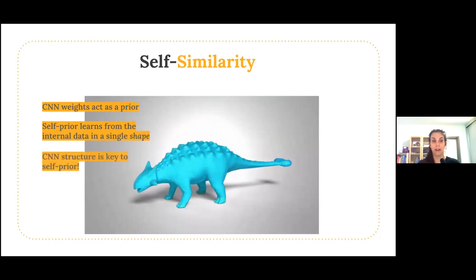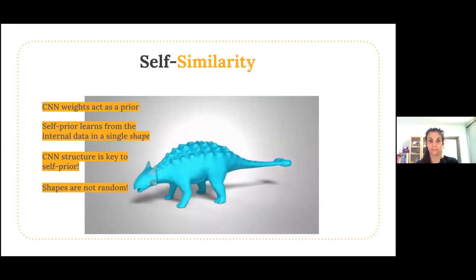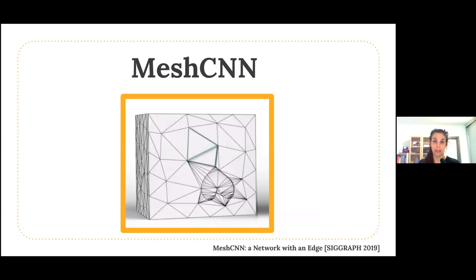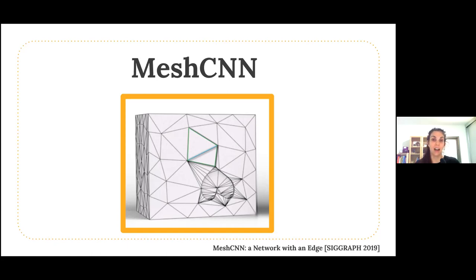The key to the self-prior is the unique structure of a convolutional neural network. The convolutions are applied locally, and the same local filters are utilized over the entire shape. The premise is that shapes are not random — they contain strong self-correlations across multiple scales. The CNN used in this work relies on our earlier work, MeshCNN, which is a technique for applying convolutional neural networks on irregular triangular meshes. MeshCNN learns deep features on the edges of a mesh, which have a fixed-size one-ring neighborhood of four edges. MeshCNN gives us the framework needed to employ convolutional neural networks directly on mesh edges, which we use for learning the self-prior.